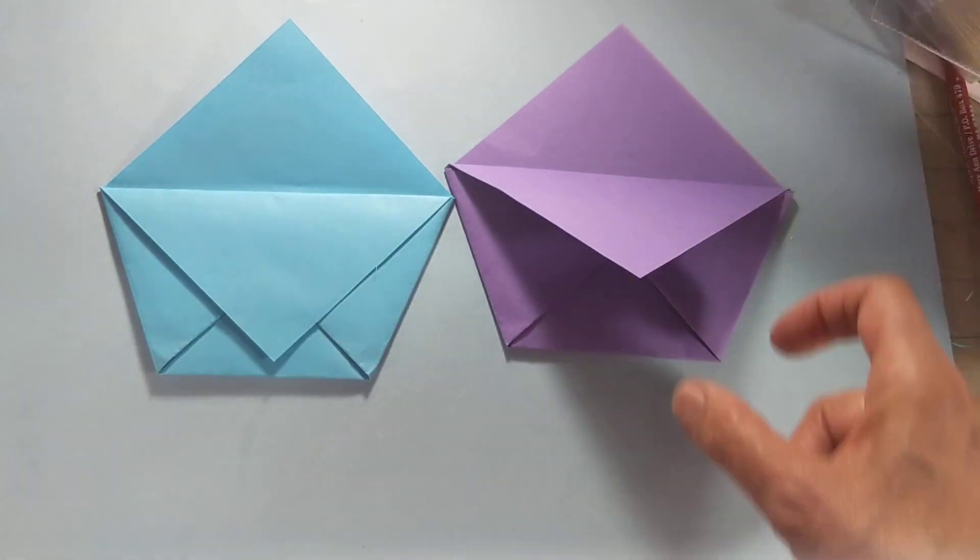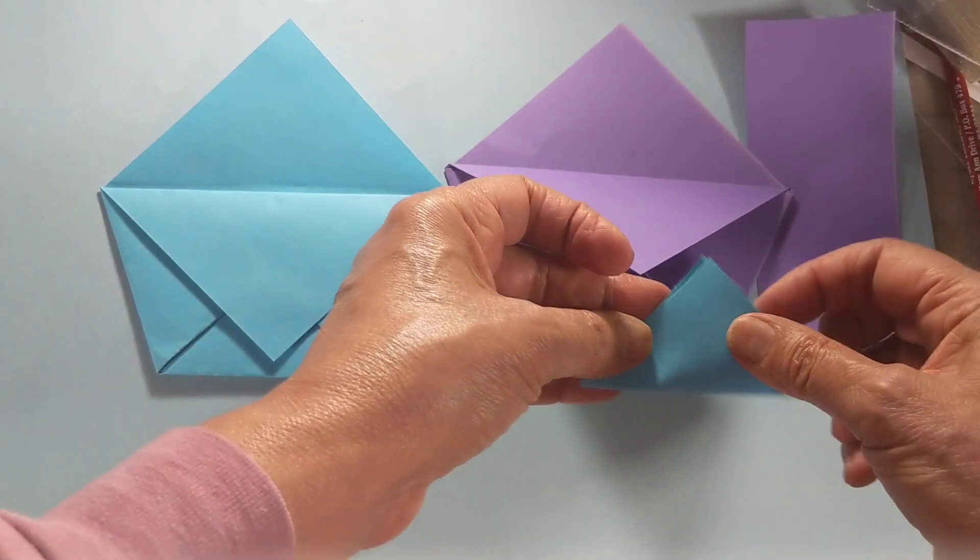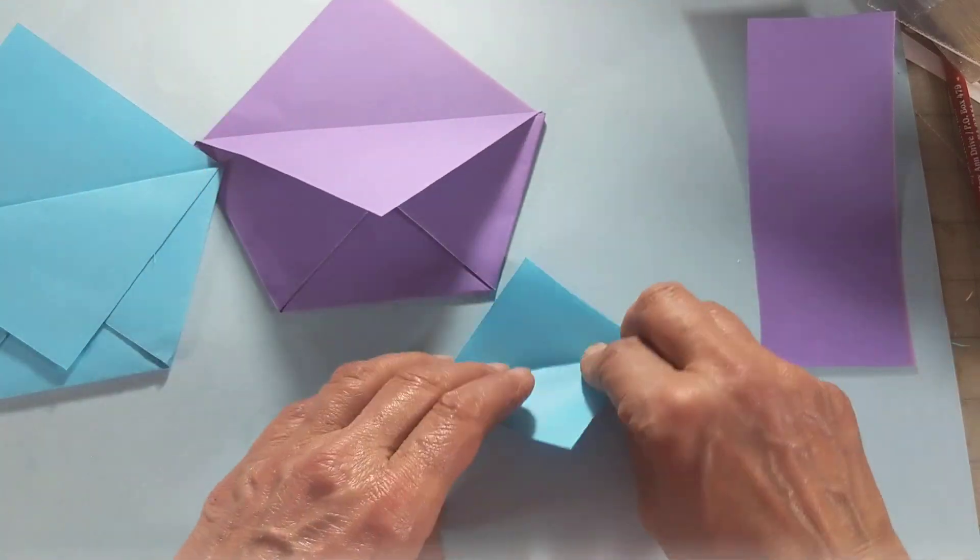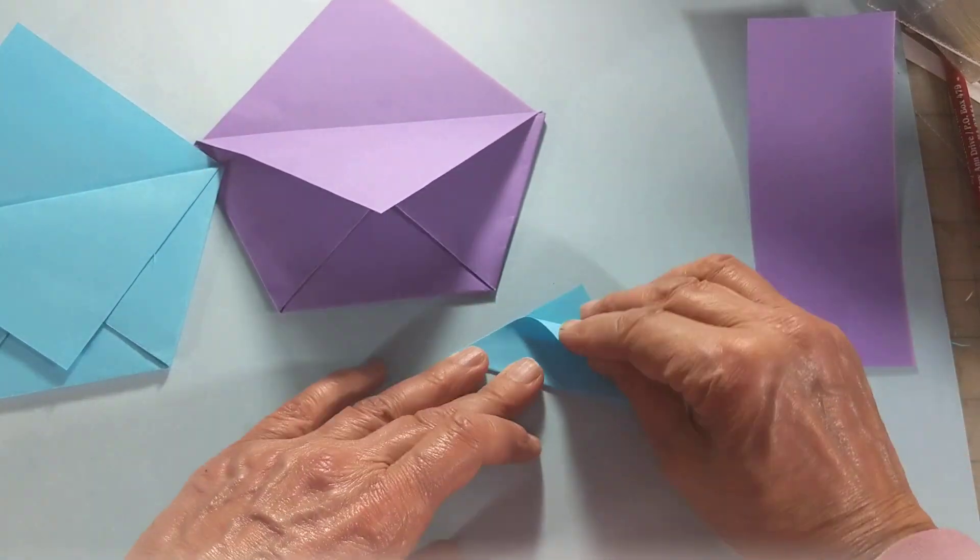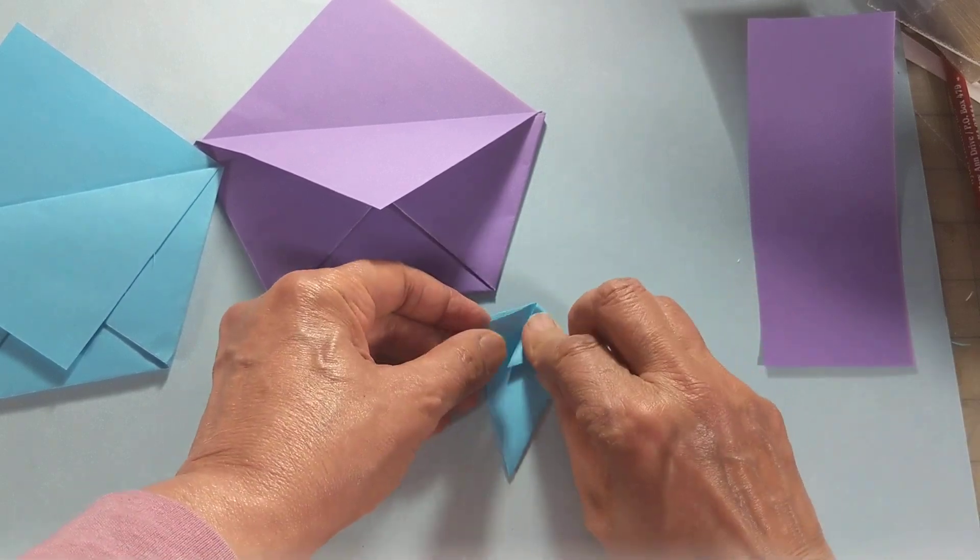One other thing to keep in mind is that little strip that we cut off. What you can do with that is make another little triangle, make another little square, and make a scaled-down version of the origami pocket.